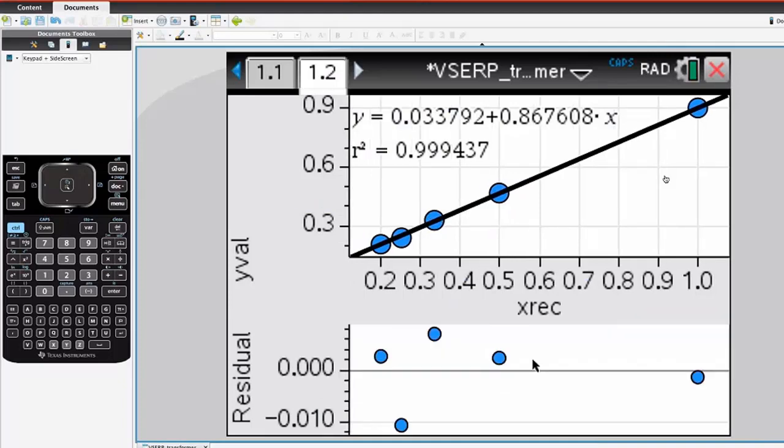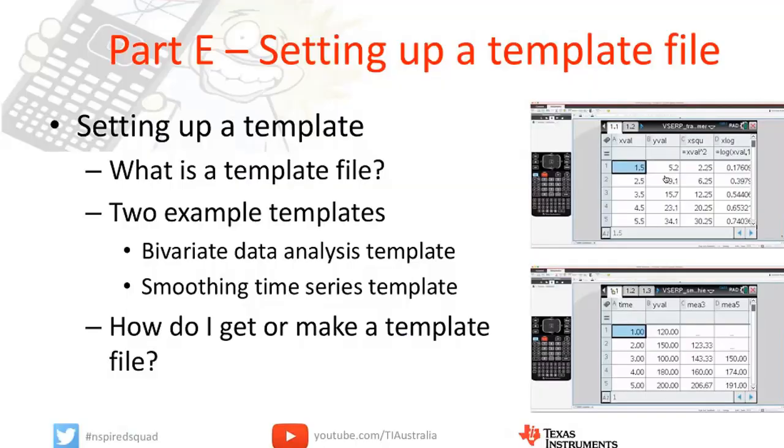It's hard to argue that there's much of a pattern in the R squared, very high. So that's an example of a template file. Useful just to have on your calculator should you get questions that relate to transformations of variables.